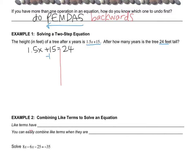So first thing I'll do is minus 15. I'm going to line it up under the 15 so it easily cancels. And then I bring down what's left, 1.5x equals, and 24 minus 15 is 9.